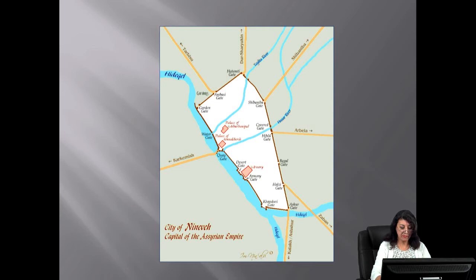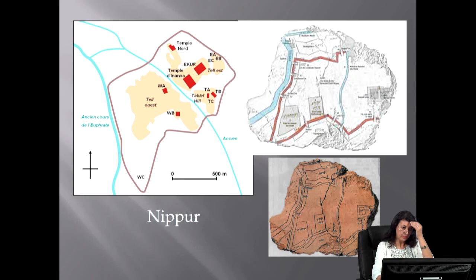In Upper Mesopotamia, although wells might have been the main sources of water for neighborhoods, Assyrian kings were keen to provide their cities with additional water sources. The remains of the aqueduct at Jerwan, which King Sennacherib built to provide Nineveh with fresh water, are still witness to such huge undertakings.